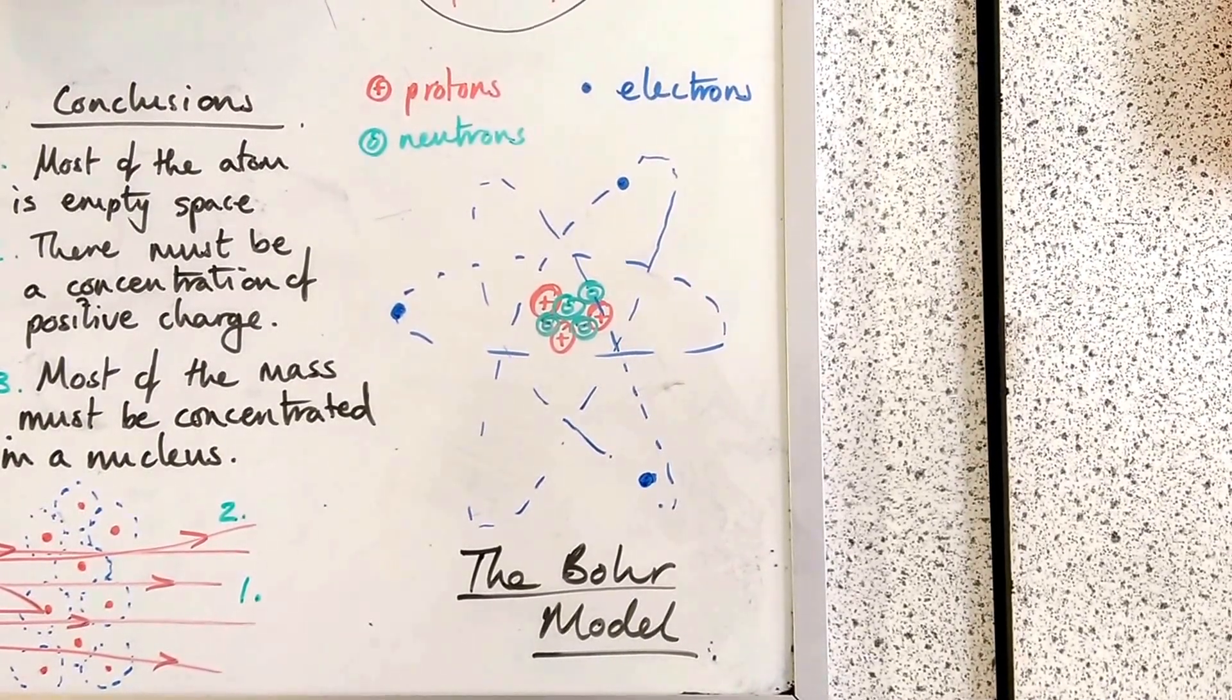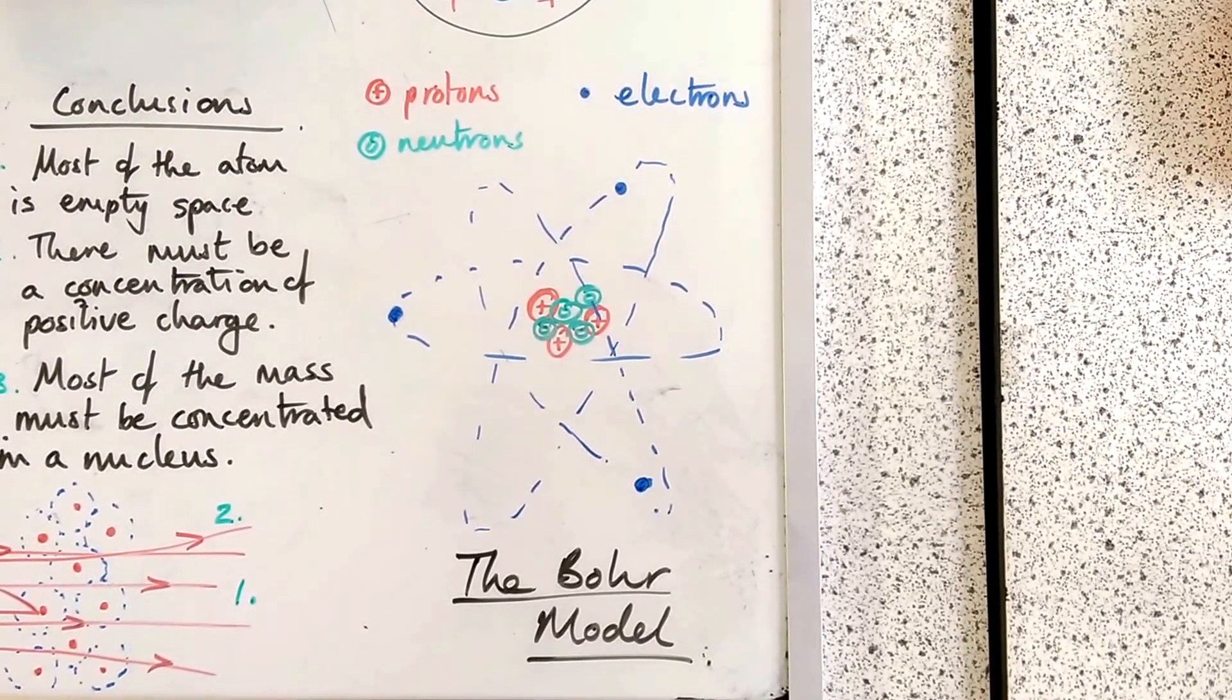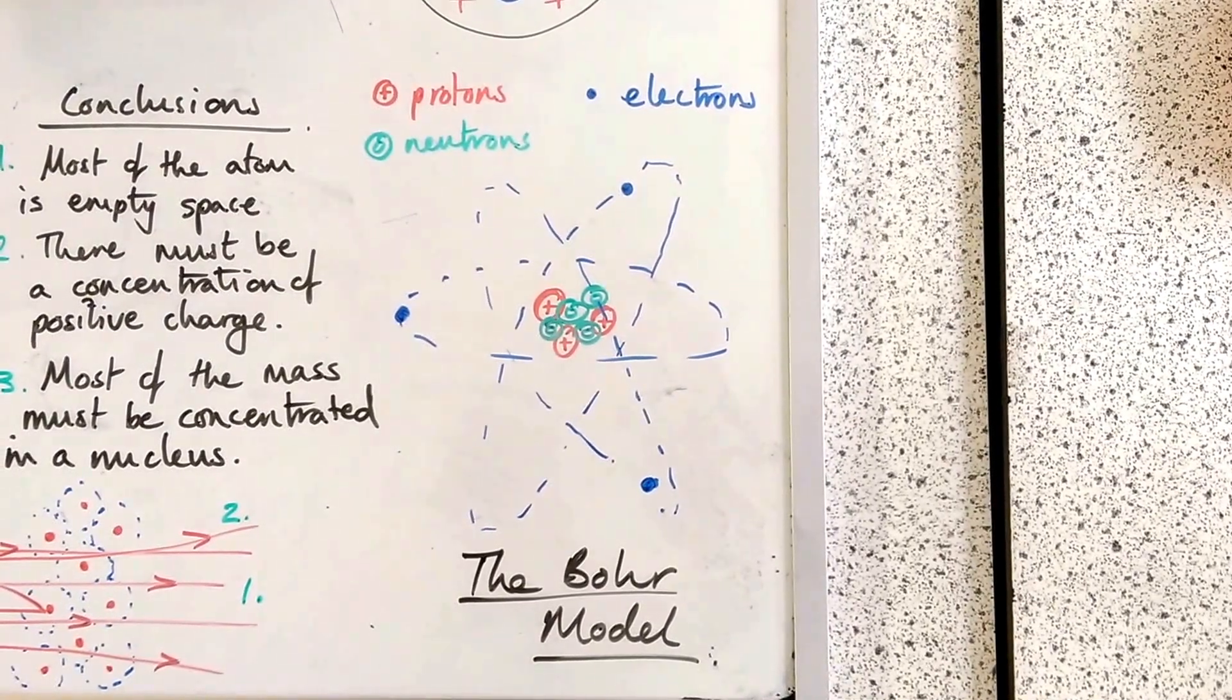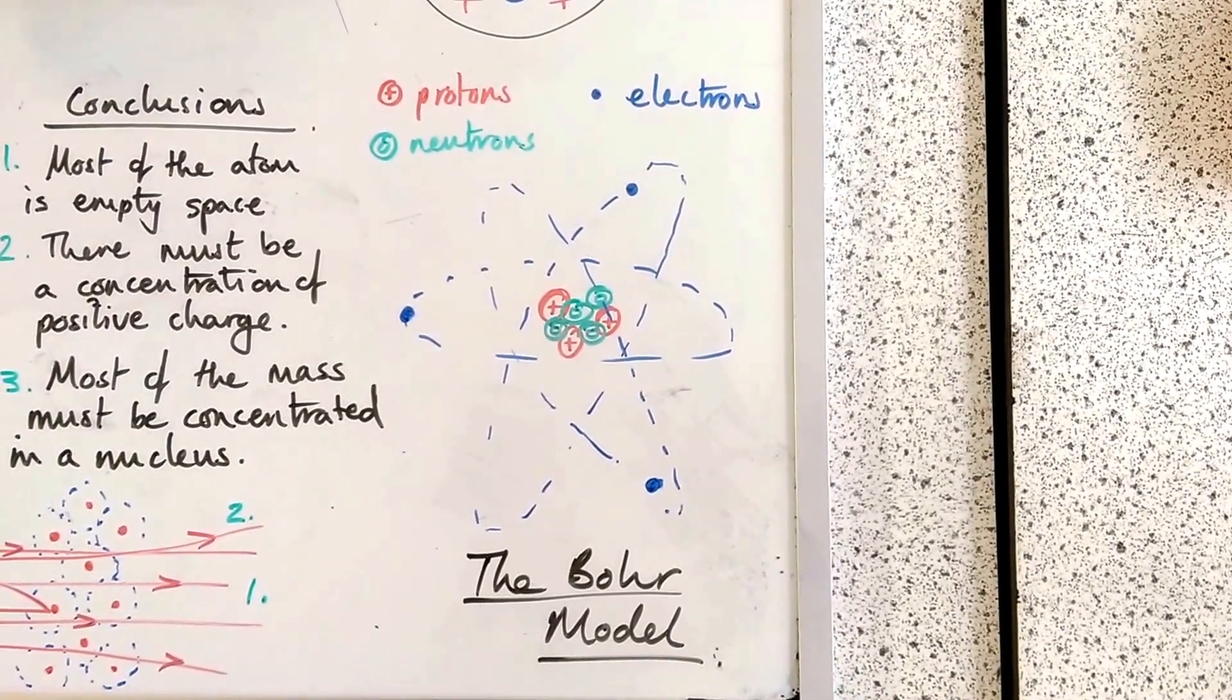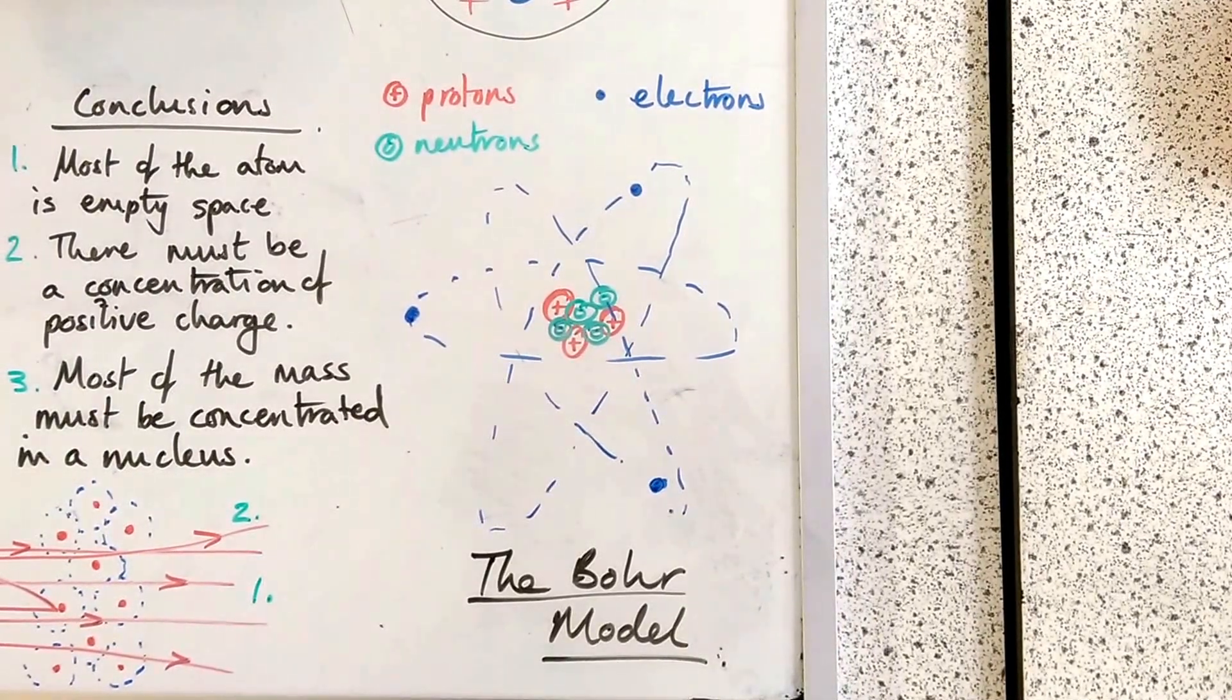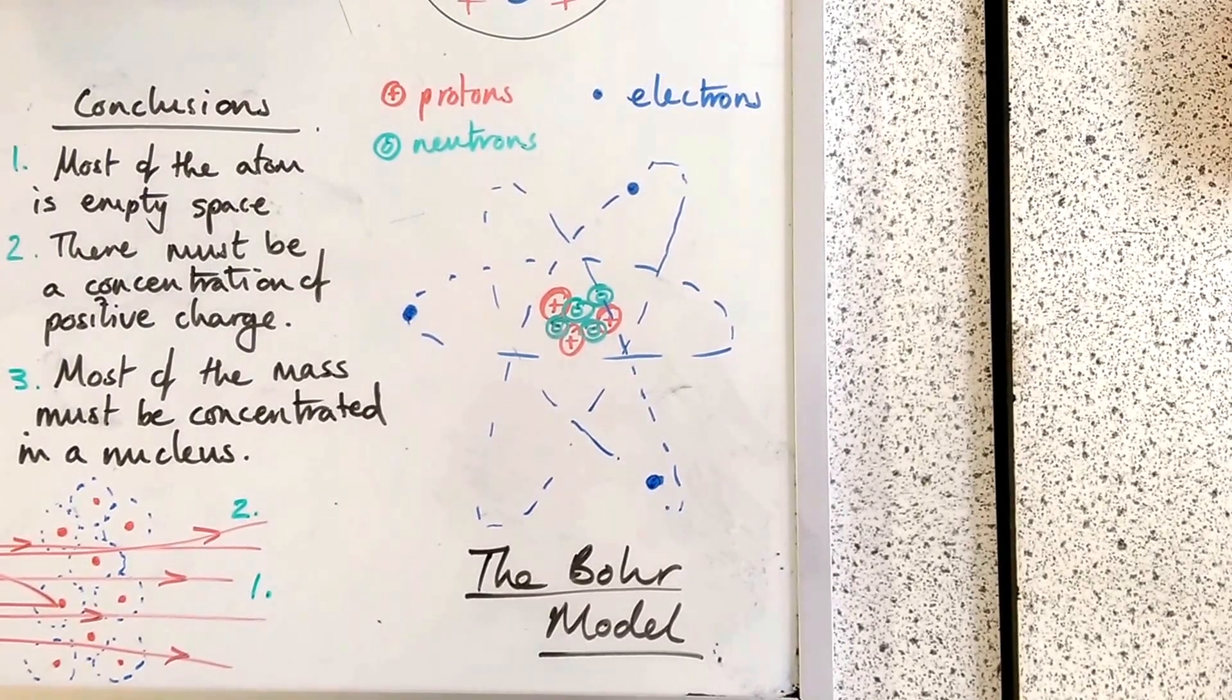In the nucleus, and accounting for the rest of the mass, is neutrons, which are neutral particles. They have a charge of zero. And orbiting this nucleus at different energy levels are electrons, which carry the negative charge, so that each atom has an overall charge of zero.